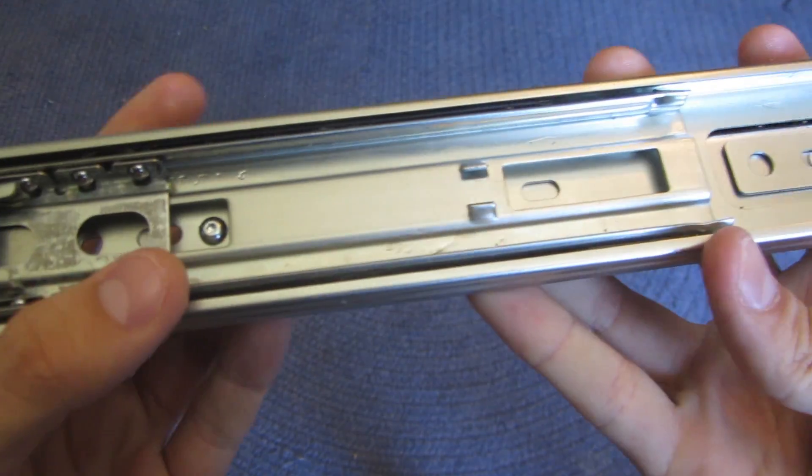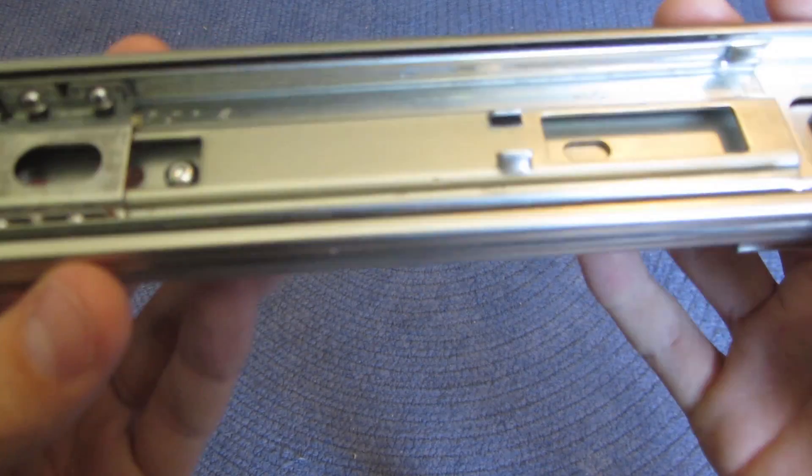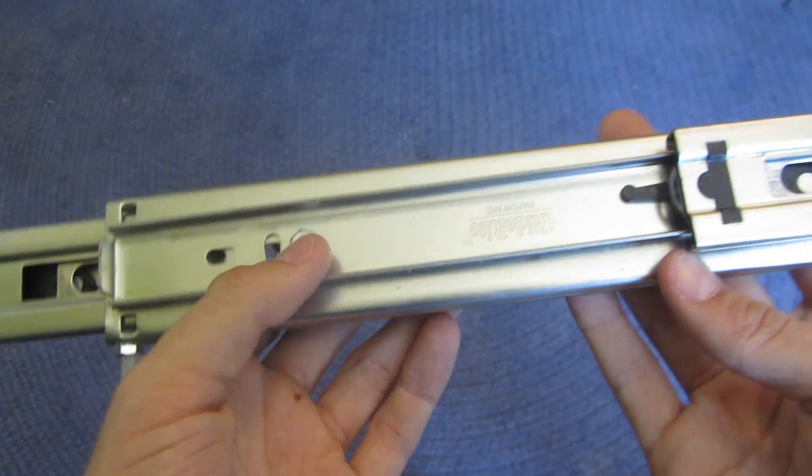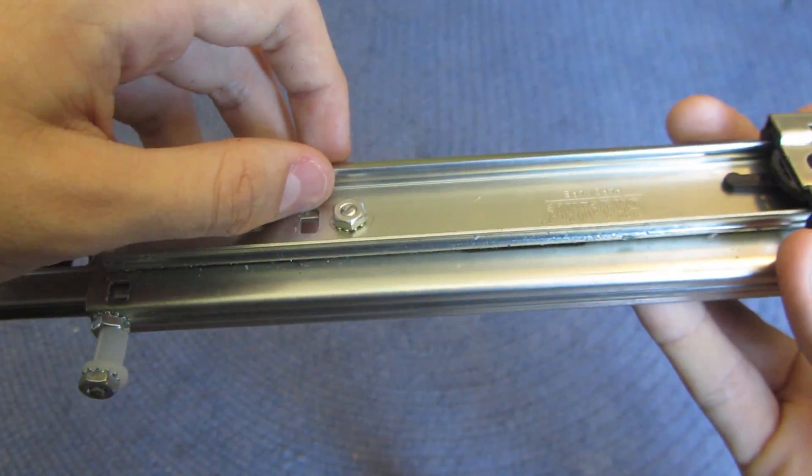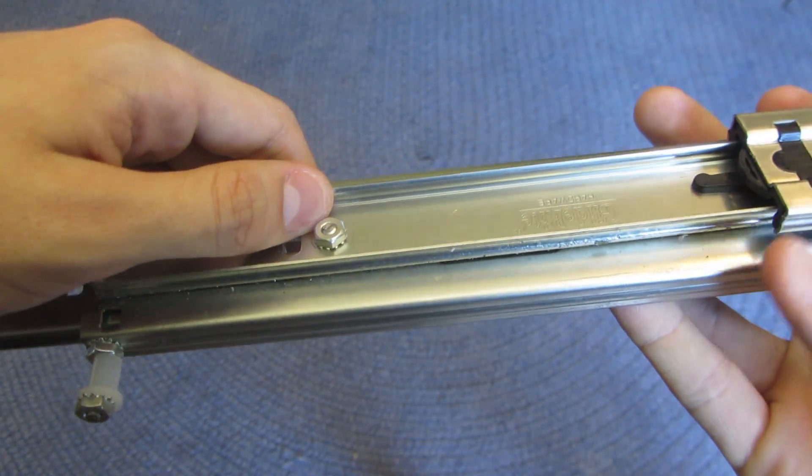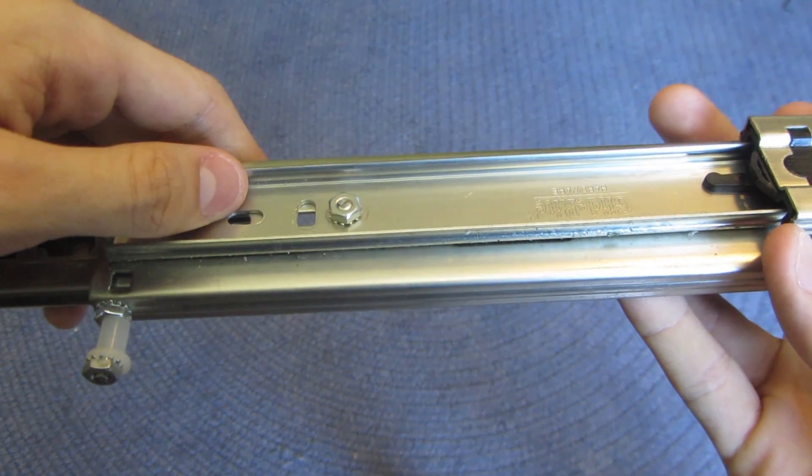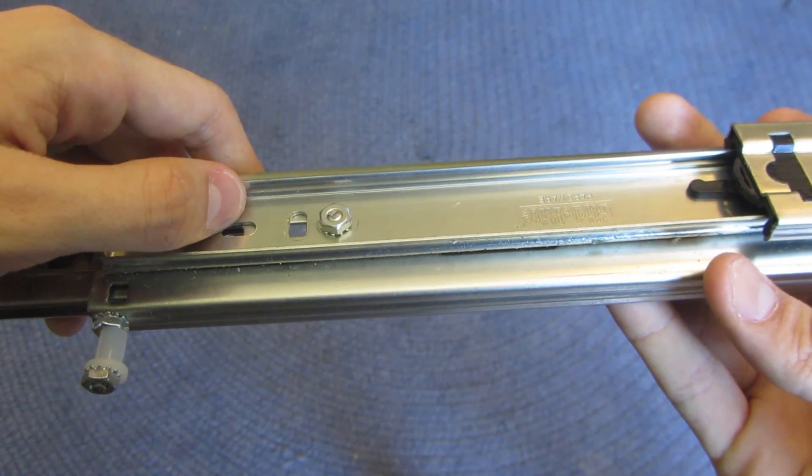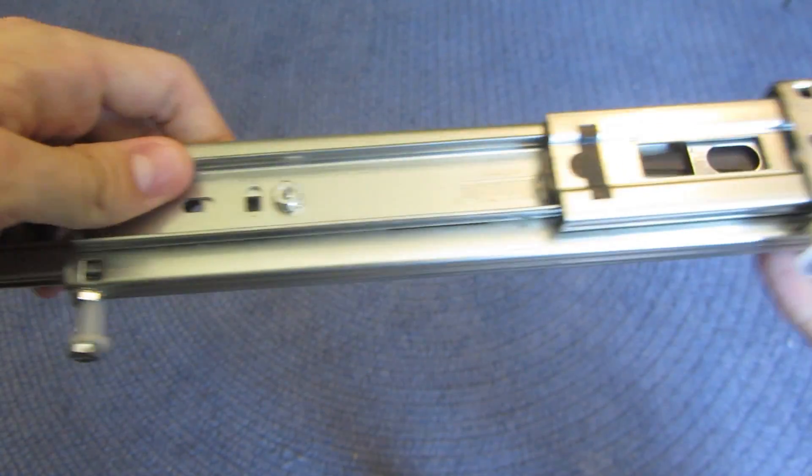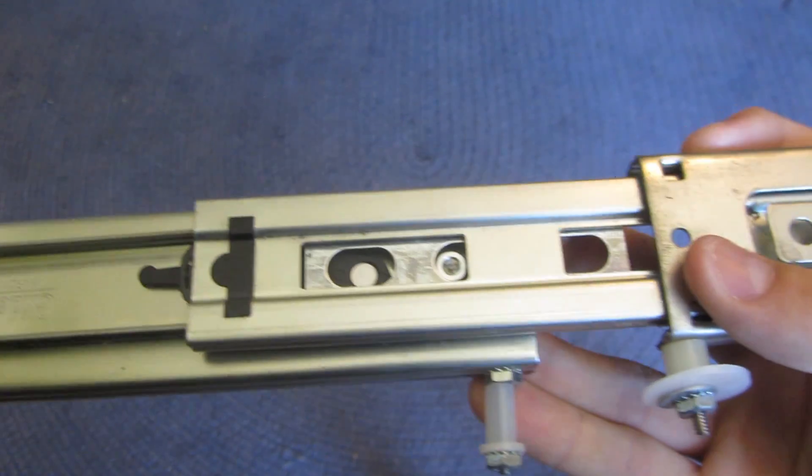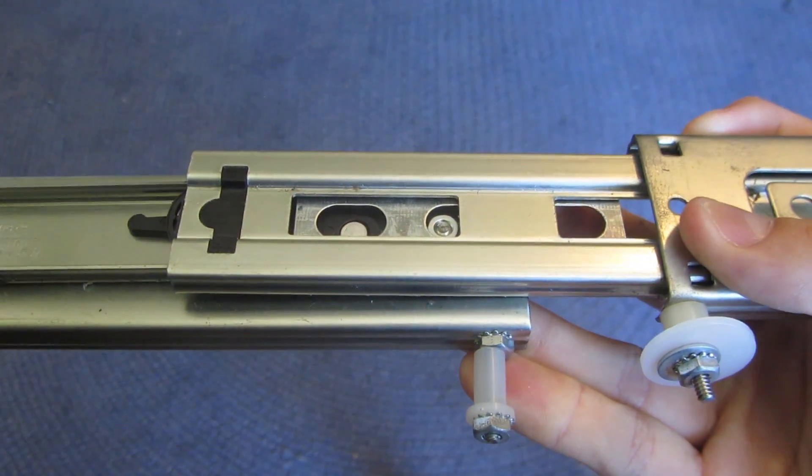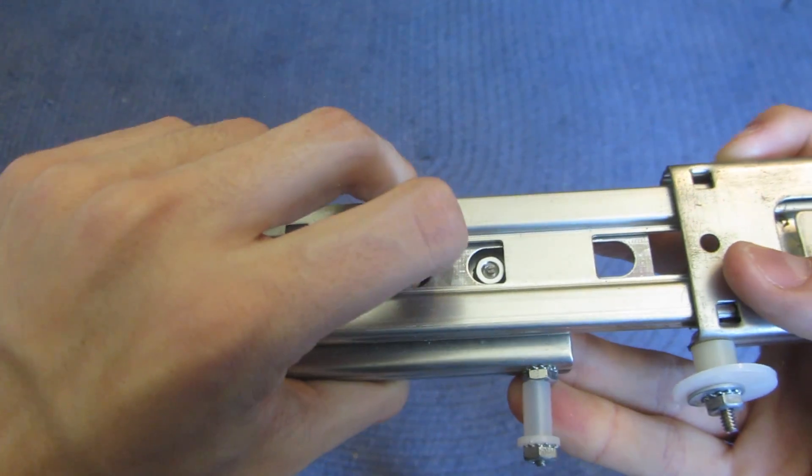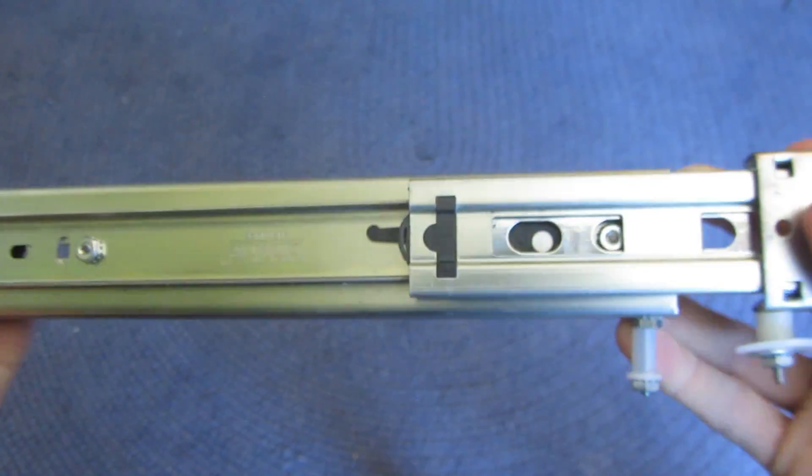These are low profile button head cap screws that you can either get at the hardware store or McMaster-Carr. These are just regular cap nuts on the back. We recommend that you use Loctite on your cap nuts because those get really painful to access later on. You don't want to be tightening this stuff because like this one is a pain to get to. It depends on what drawer slides you get because some aren't this bad but these are pretty awful.